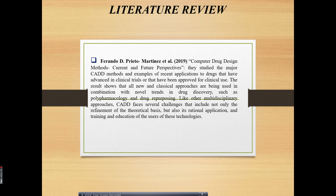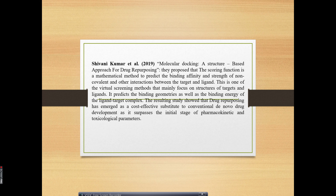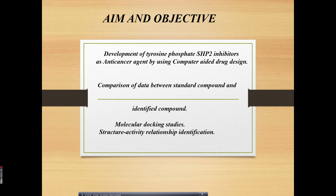Now directly come to aim and objective. My aim and objective is very clear: development of tyrosine phosphatase SHP2 inhibitor as an anti-cancer agent by using computer-aided drug design. Computer-aided drug design involves designing and molecular modeling of compounds with the help of software. Software options like Schrödinger, AutoDock Vina, and various others such as OpenBabel and PyMol are available. Various numbers of software are available — most are free and some are paid versions.